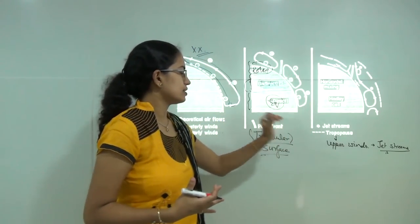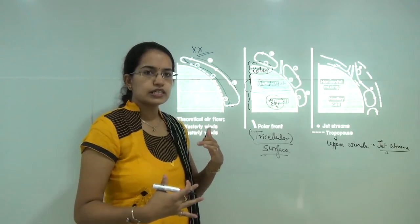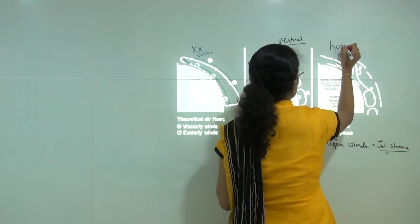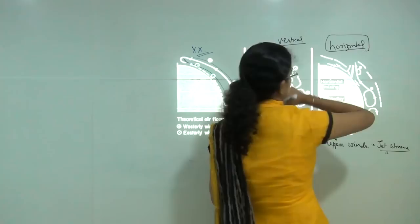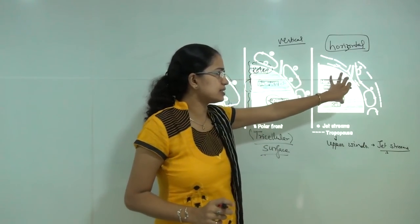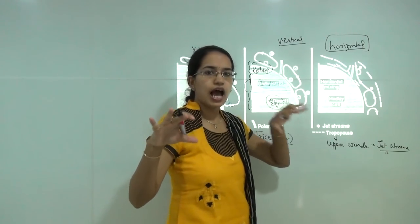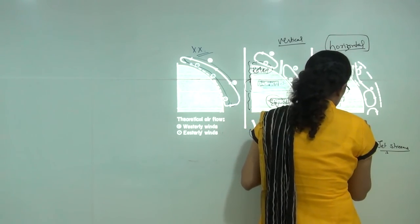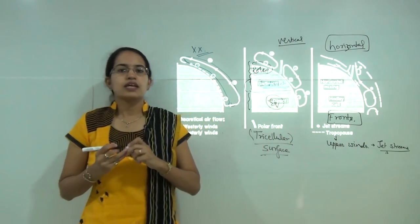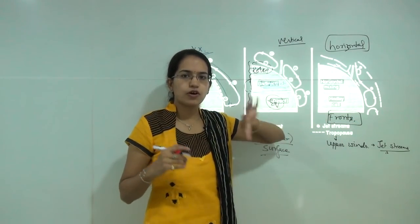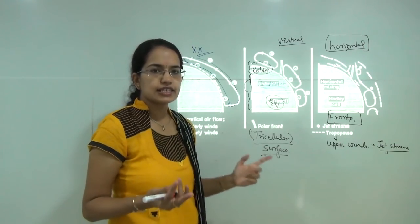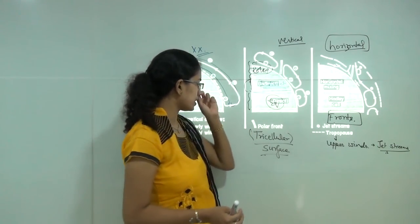Before Palmen's model, all models focused on air circulation in the vertical aspect and missed out on the concept of horizontal mixing of air. Palmen introduced the concept of horizontal mixing of air and explained that it is important for understanding the different air masses that exist and the formation of fronts, which can be very well explained with Palmen's model. His main idea focused on upper wind circulation, frontal formations, and horizontal mixing of air. He also ignored seasonal variations and land-sea contrast, which had formed the basis of the tricellular and single cell models.